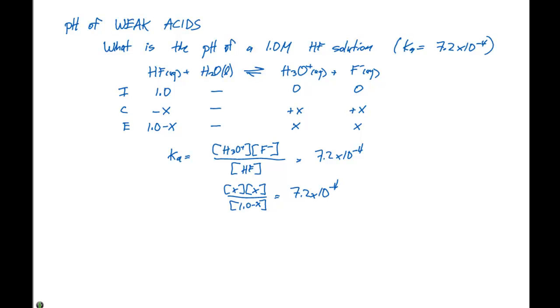This will give us, if we distribute everything out here, we're going to have X squared equaling 7.2 times 10 to the minus 4. We can now say that X squared plus 7.2 times 10 to the minus 4 X minus 7.2 times 10 to the minus 4 is going to be equal to 0.